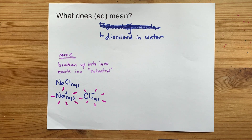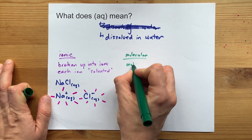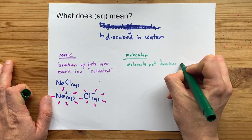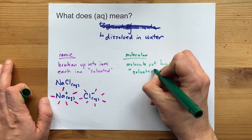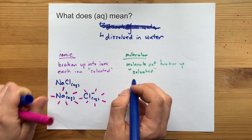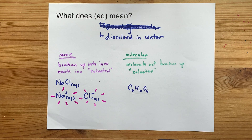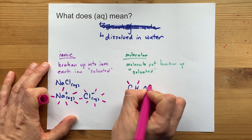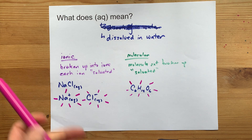A covalent or molecular compound is generally intact — the molecule is not broken up, but is solvated anyway, meaning there are water molecules around each of the molecules. Something like C6H12O6, or glucose, a sugar which definitely dissolves in water, will have some water molecules surrounding it. I actually have no idea how many water molecules glucose needs, but that's the way it is.